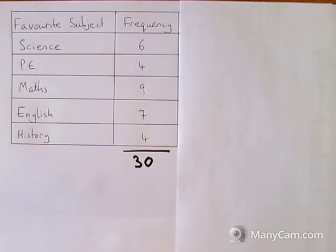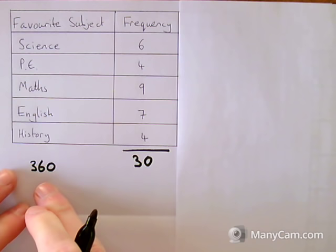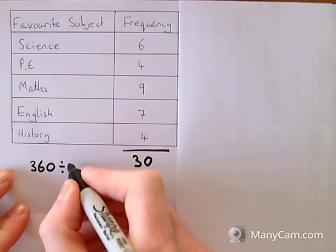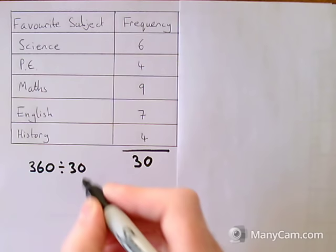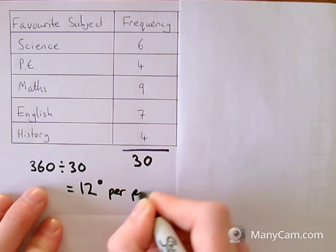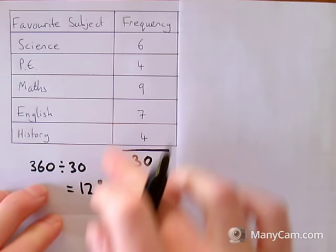Then I need to work out how many degrees I'm going to draw from my pie chart per person. There's 360 degrees in a circle and I need to share those 360 degrees out with those 30 people. So I need to do 360 divided by 30. 360 divided by 30 gives me 12. So I know that it's 12 degrees per person. For each person who took part in this survey they're going to be worth 12 degrees in my pie chart.